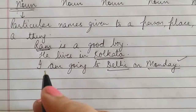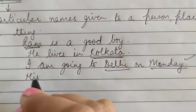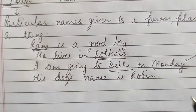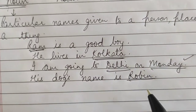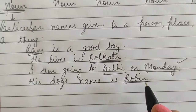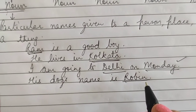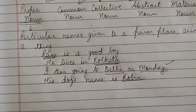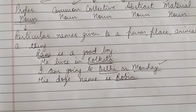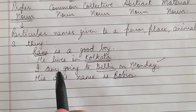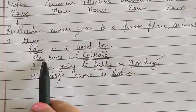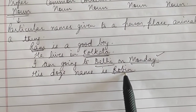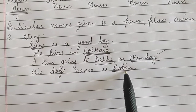One more example: his dog's name is Robin. Robin is the particular name given to that dog, so this is also a proper noun. In all these above sentences you can see that some particular name is given to a person, place, animal or a thing. So these are called proper nouns — like Ram, Kolkata, Delhi, Monday, Robin.